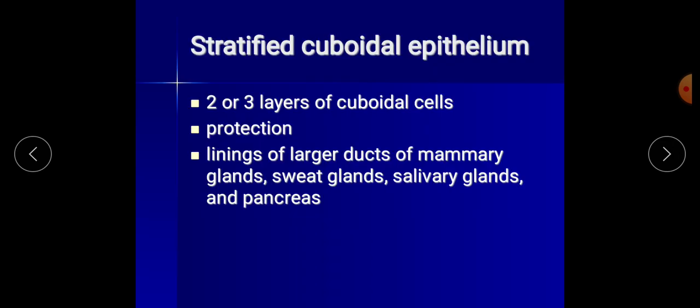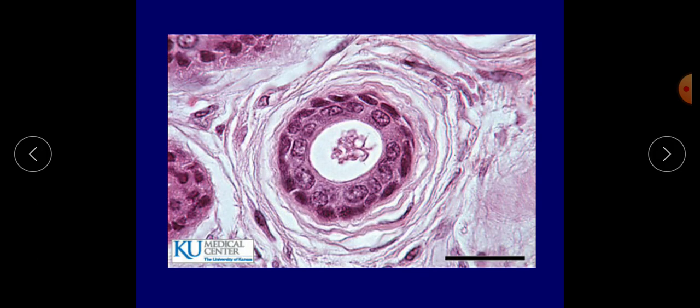Stratified cuboidal epithelium has two to three layers of cuboidal cells. Its function is protection, and it lines the larger ducts of mammary glands, sweat glands, salivary glands, and pancreas. There are two or more layers of cells; cells in the apical layer are cube-shaped. It is a fairly rare type, occurring in ducts of adult sweat glands, esophageal glands, and part of the male urethra.